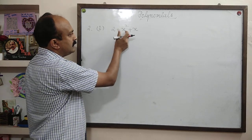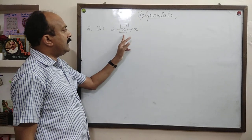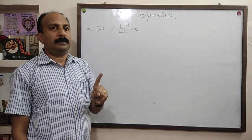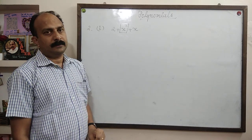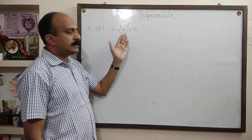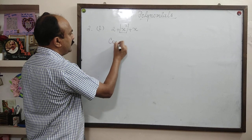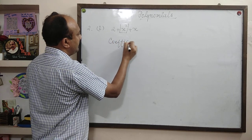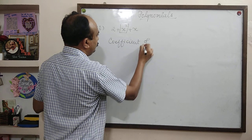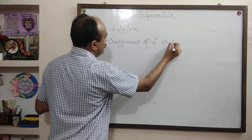This is the x square term. What is the numeral along with x square? Only x square means one x square — normally one will not be written. So the coefficient of x square in this question is 1.